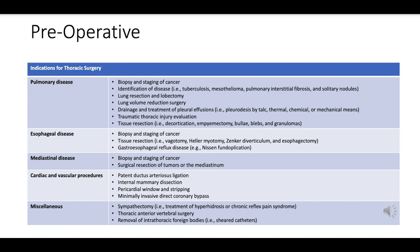Miscellaneous indications include procedures for thoracic anterior vertebral surgery, treatment for sympathetic nerve-related issues such as chronic reflex pain syndrome or hyperhidrosis, and extraction of intrathoracic foreign objects such as sheared catheters.